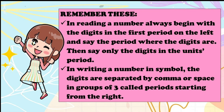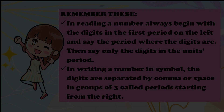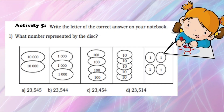In reading a number, always begin with the digits in the first period on the left and say the period where the digits are, then say only the digits in the units period. In writing a number in symbol, the digits are separated by a comma or space in groups of three called periods, starting from the right. Now let's do Activity Number 5: write the letter of the correct answer on your notebook or paper.